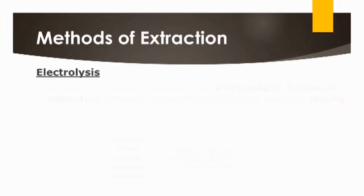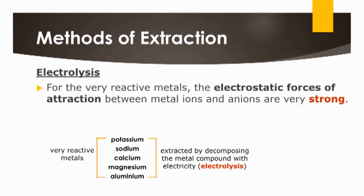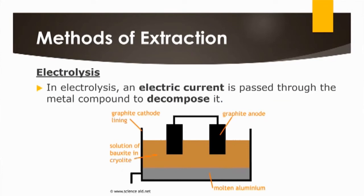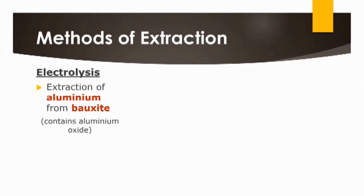For electrolysis, it is used for very reactive metals because the electrostatic forces of attraction between the metal ions and other ions are very strong. Since these forces are strong, a lot of energy is needed, which is why we use this expensive process called electrolysis. An electric current is passed through the metal compound to decompose it and obtain the pure metal. Let's watch a video on extracting aluminum from its ore, bauxite.